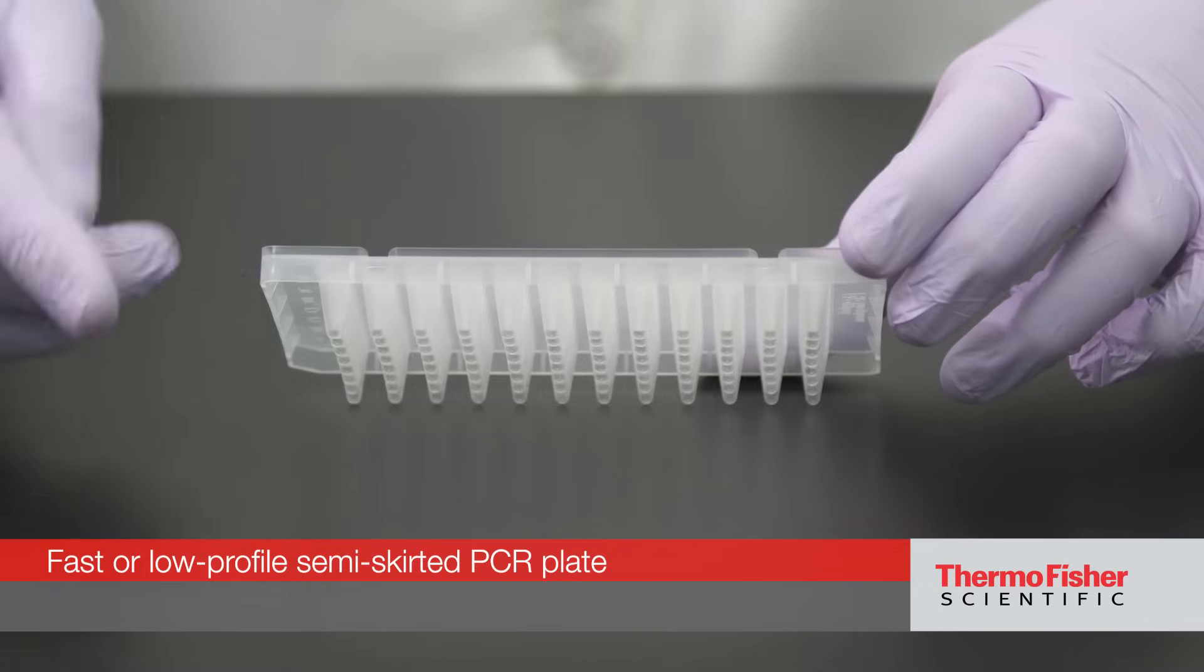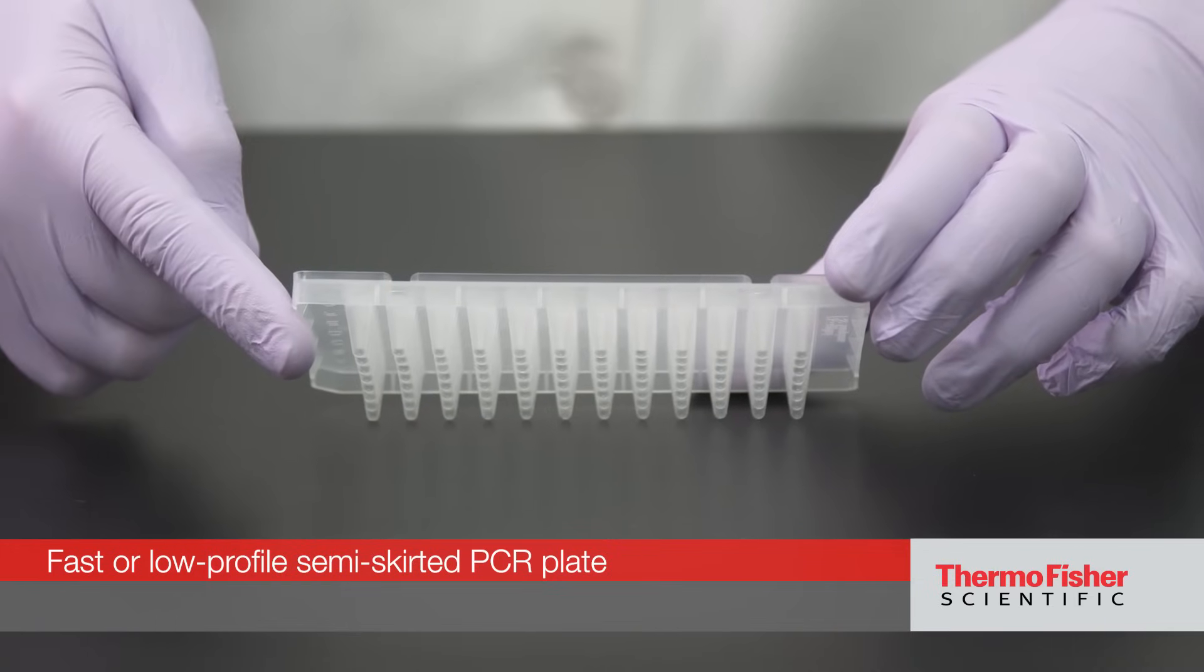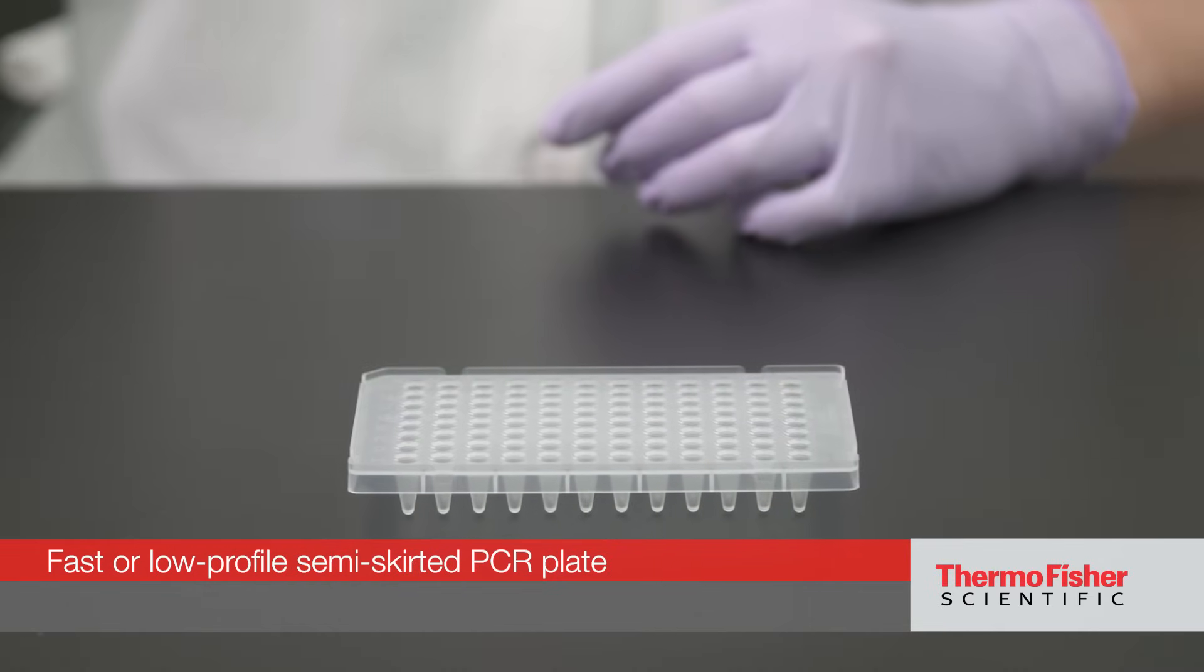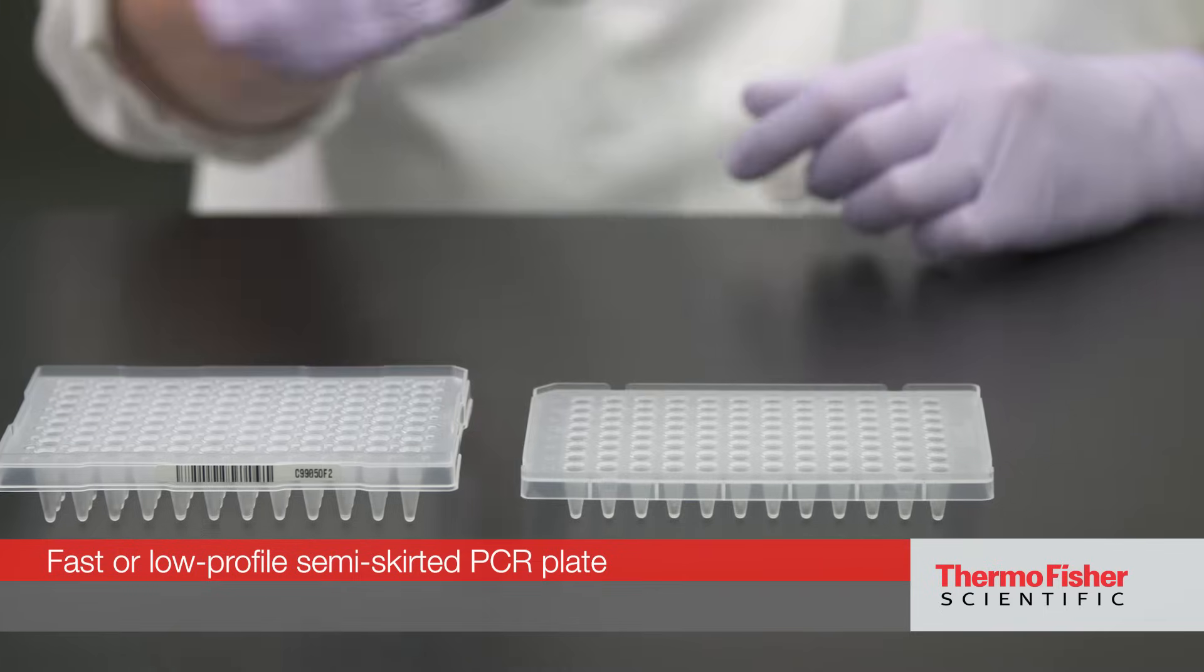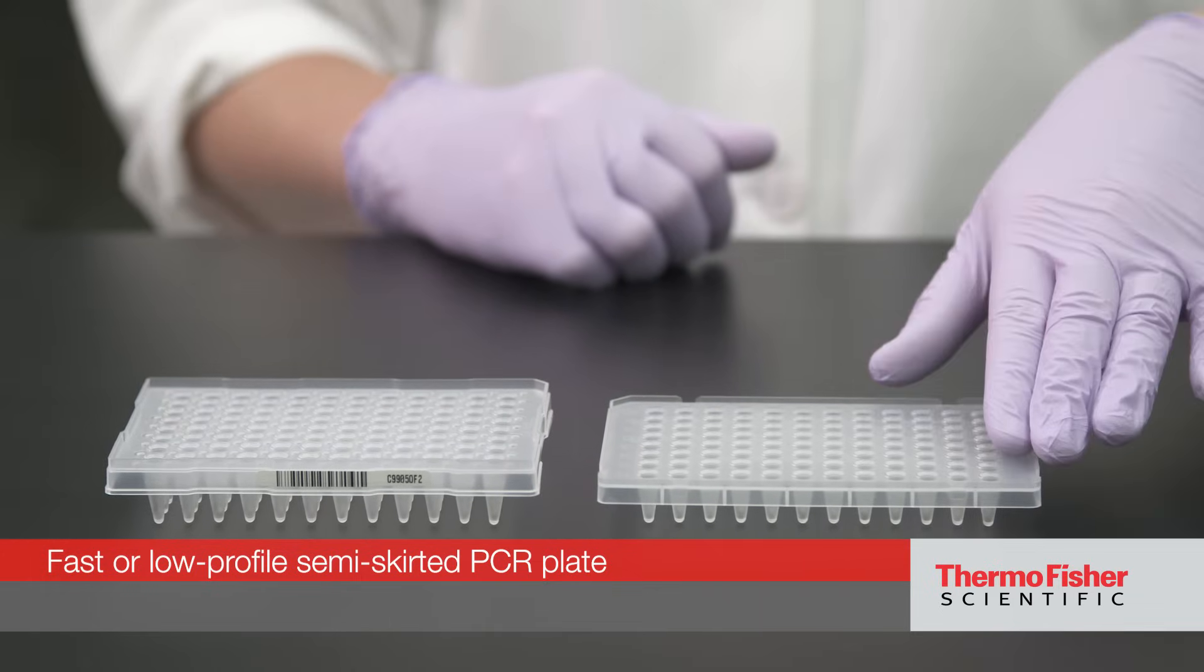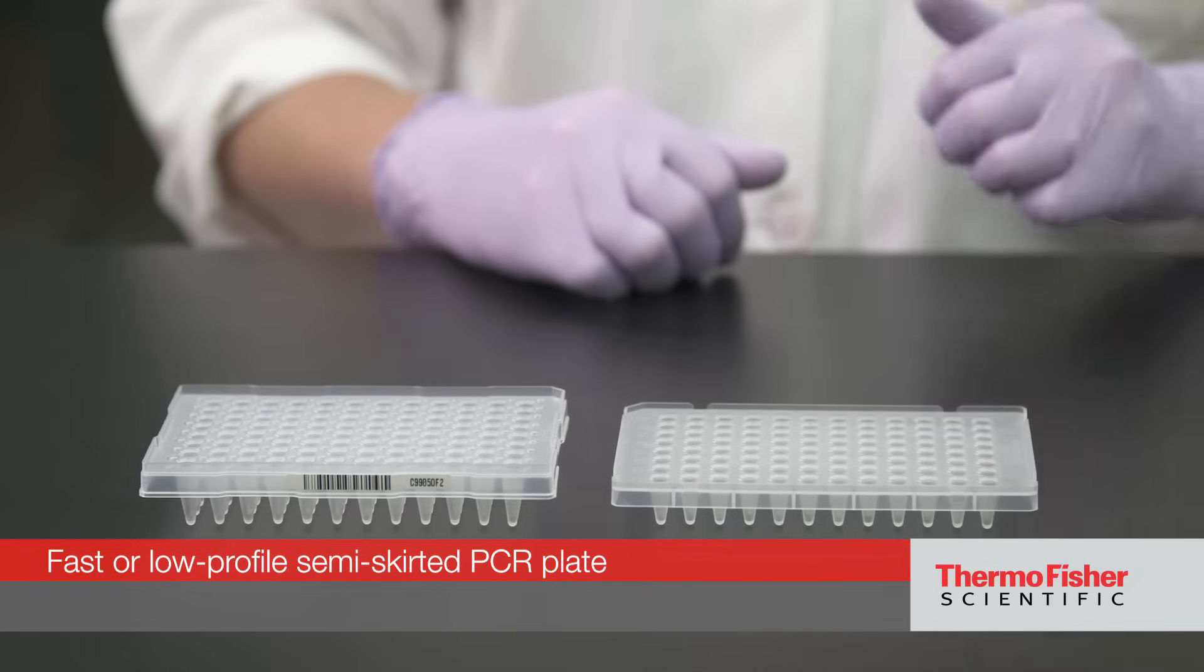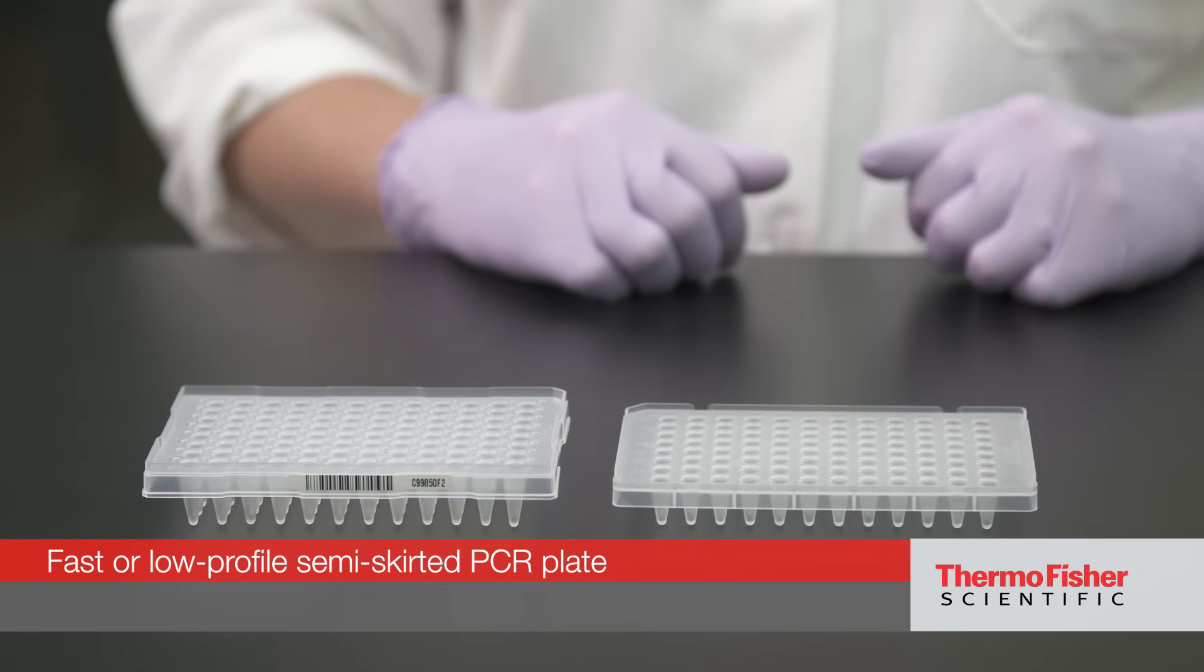Fast or low profile PCR plates are designed with smaller volume capability. Therefore, well height is shorter when compared to a standard 96 well plate. These plates are required for fast or low profile thermal cycler blocks.